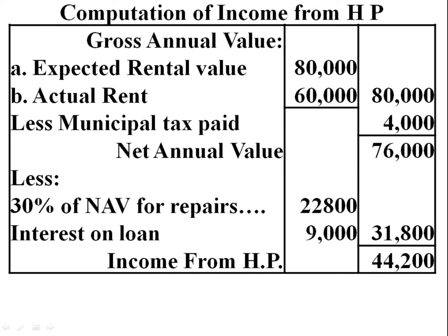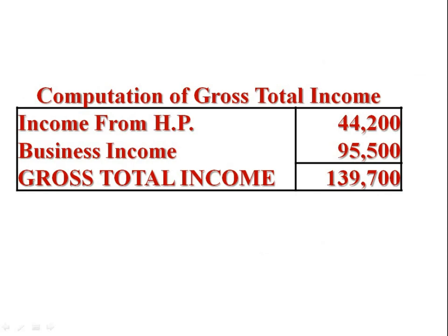Then compute gross total income: income from house property Rs. 44,200 plus business income Rs. 95,500. Our answer — gross total income is Rs. 1,39,700. Thank you.